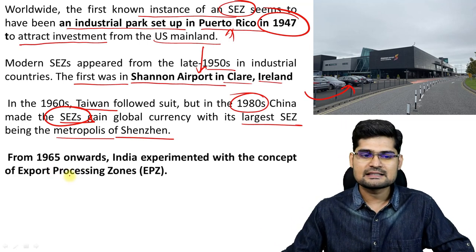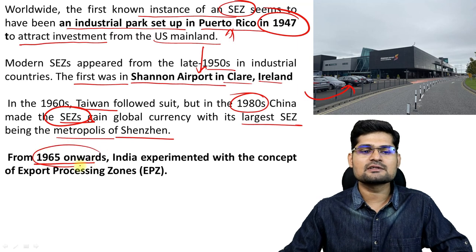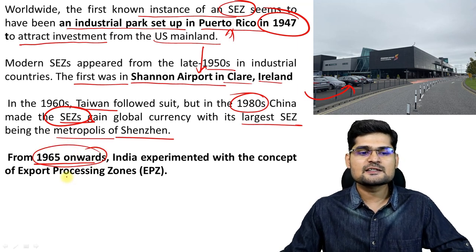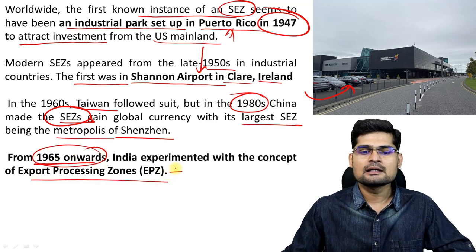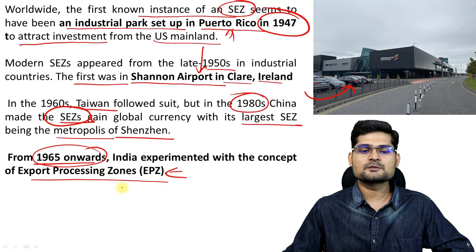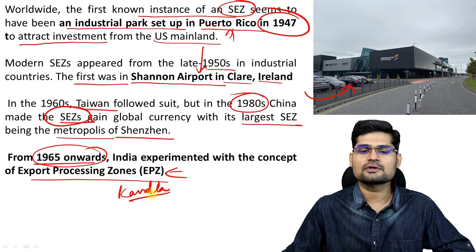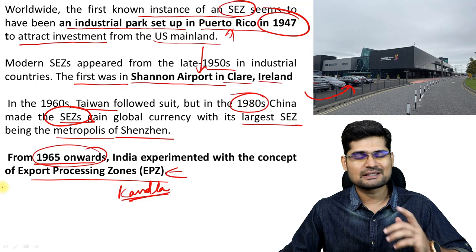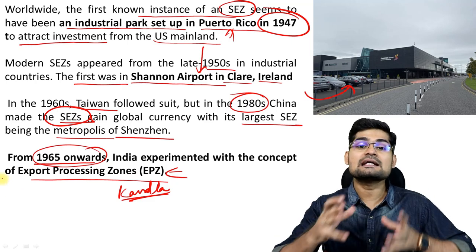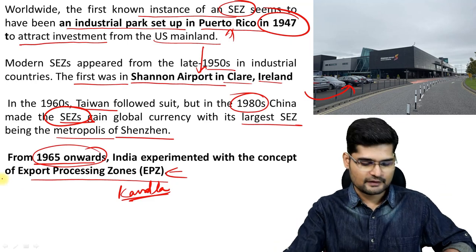From 1965 onwards in India also, export processing zones were created. Especially in Gujarat, Kandla port was the first, created in 1965. Since then in India also, the concept started evolving.